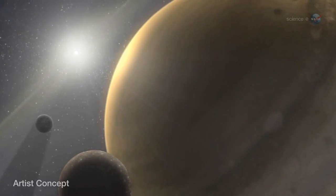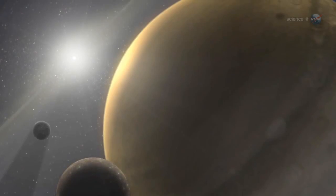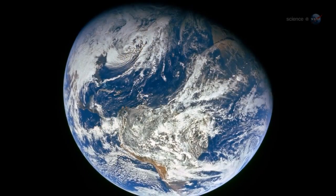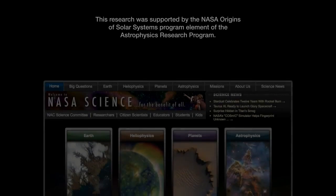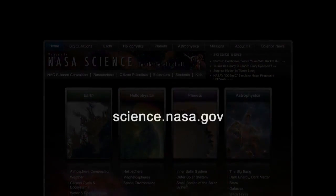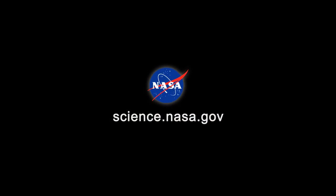One day, he says, our own solar system may end up the same way. In five billion years, the fried planet could be Earth. Until then, for breaking science news, stay tuned to science.nasa.gov.